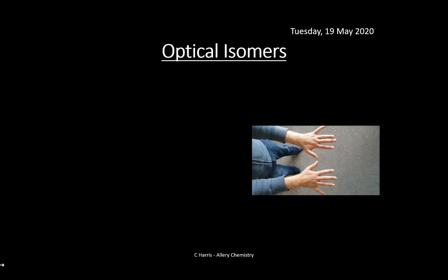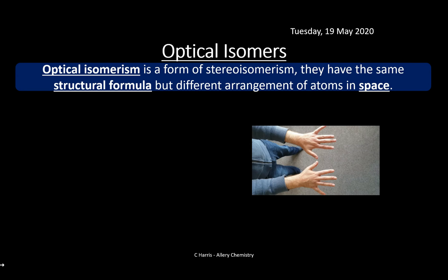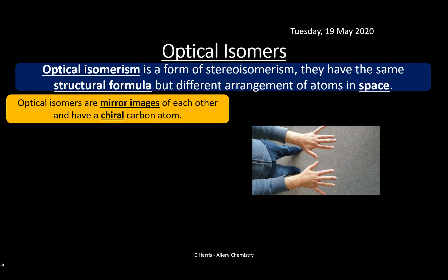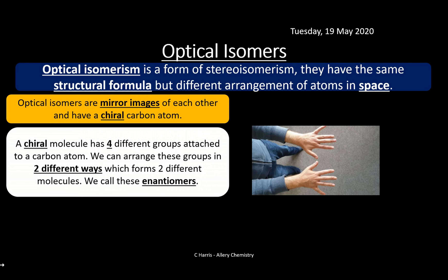Let's look at optical isomers first. Optical isomerism is a form of stereo isomerism, which means that optical isomers have the same structural formula but a different arrangement of atoms in space. Optical isomers are mirror images of each other and they have a chiral carbon — the carbon in the middle of a molecule. When we say chiral, the atom has four different groups attached to it, and we can arrange these groups in two different ways, forming two different molecules called enantiomers.